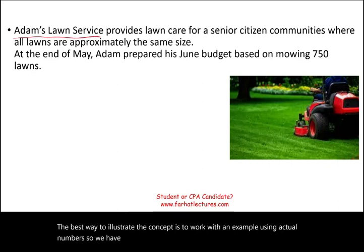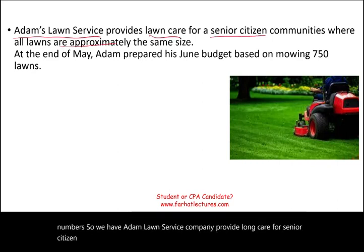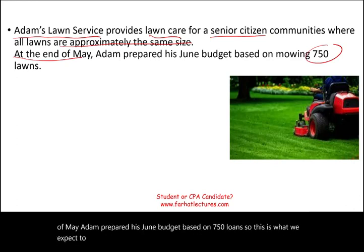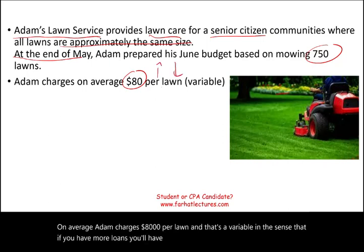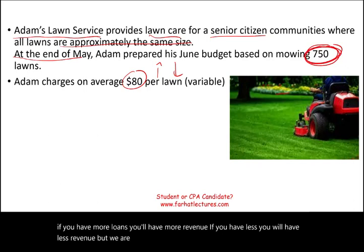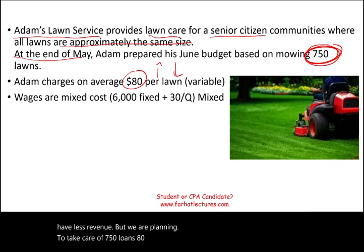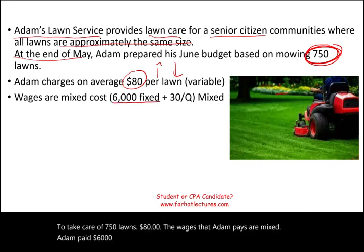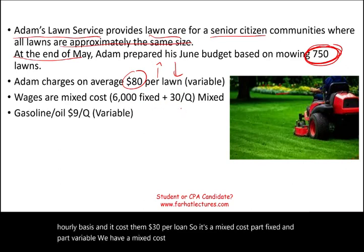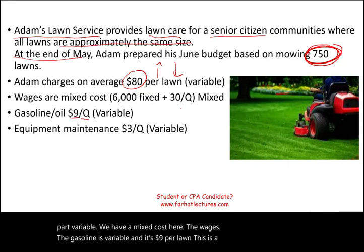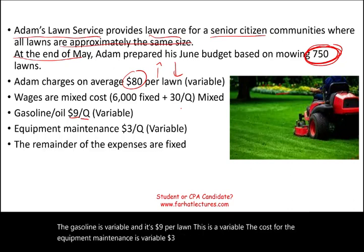The best way to illustrate this concept is with an example. Adam Lawn Service Company provides lawn care for senior citizen communities, where all lawns are approximately the same size. At the end of May, Adam prepared his June budget based on 750 loans. On average, Adam charges $80 per loan — variable revenue. Wages are a mixed cost: $6,000 fixed plus $30 per loan variable. Gasoline is variable at $9 per loan, equipment maintenance is variable at $3 per loan, and the remainder of his expenses are fixed.